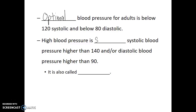High blood pressure is sustained systolic pressure higher than 140 and/or diastolic pressure higher than 90. This is also called hypertension. During physical activity, during exercise, it's expected that your blood pressure would go up — your heart starts beating faster because your muscles need more oxygen, and that's totally normal. It's only when you're resting and not doing strenuous activity and yet your blood pressure still remains elevated, higher than 140 systolic and higher than 90 diastolic, that that could be a sign of obstructions or some sort of strain on your cardiovascular system.